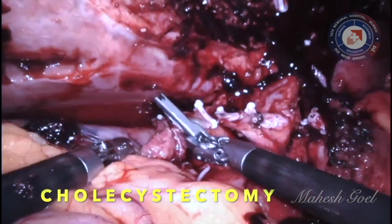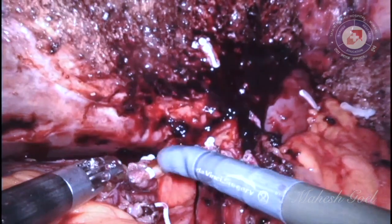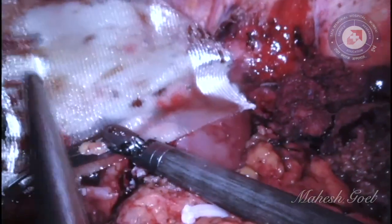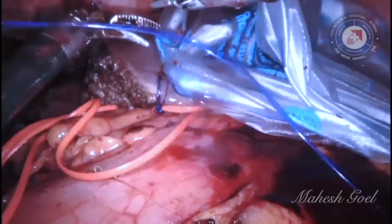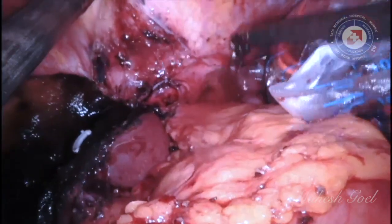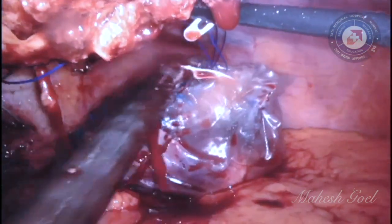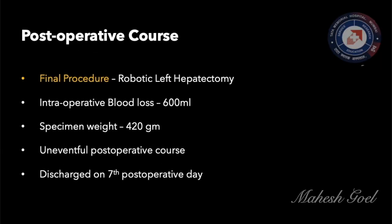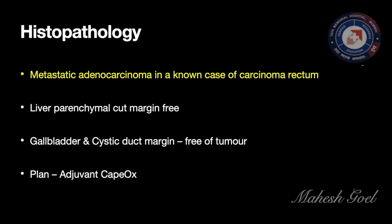Cholecystectomy is completed. Meticulous hemostasis is achieved and an absorbable hemostat is placed over the raw transected surface. A specimen bag is introduced into the abdominal cavity and both the transected liver and the resected gallbladder are placed within the bag. Specimen retrieval is done through an opening created by communicating two of the robotic ports. With a total intraoperative blood loss of 600 cc, our patient was discharged on postoperative day 7 with an uneventful course. Final histopathology confirmed metastatic adenocarcinoma of the rectum with clear margins, and the patient is planned for adjuvant CAPOX.